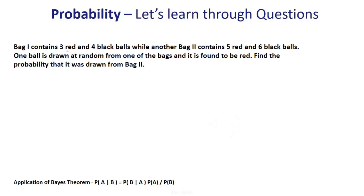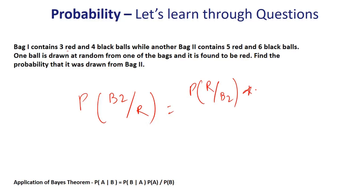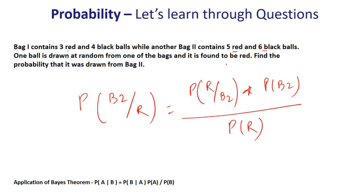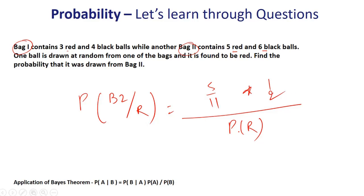Bag 1 contains 3 red and 4 black balls. Bag 2 contains 5 red and 6 black balls. One ball is drawn at random from one of the bags and it is found to be red. Find the probability that it was drawn from bag 2. We need to find P(bag 2 | red). By Bayes' theorem, this equals P(red | bag 2) × P(bag 2) divided by the total probability of getting a red ball. P(red | bag 2) = 5/11, since bag 2 has 5 red out of 11. P(bag 2) = 1/2, since there are two bags.